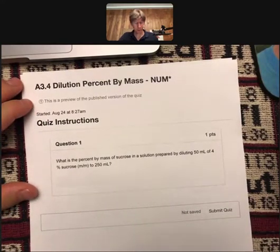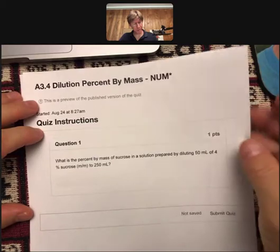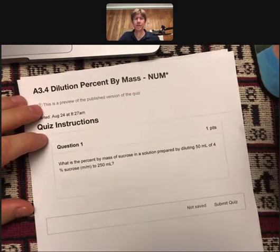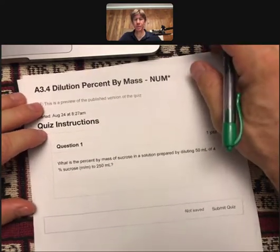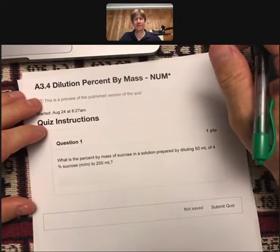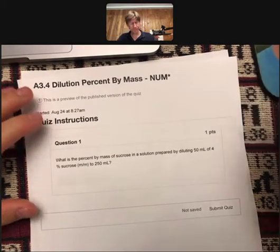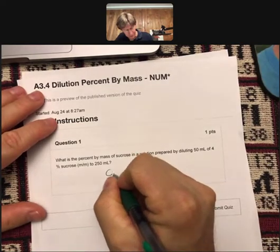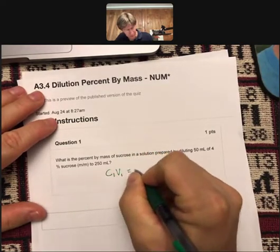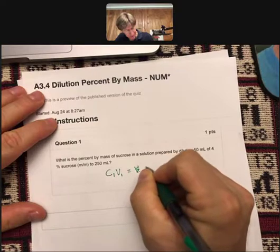This question reads, what is the percent by mass of sucrose in a solution prepared by diluting 50 milliliters of 4% sucrose mass by mass to 250 milliliters? The dilution formula is concentration 1, volume 1, equals concentration 2, volume 2.